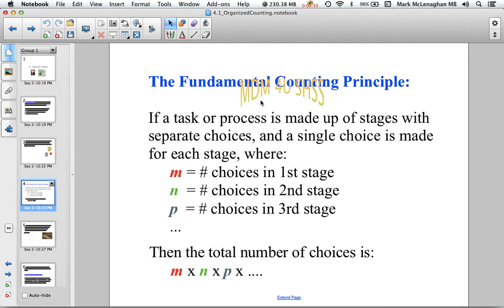This is also an example of what we call the fundamental counting principle. For a task or process made up of stages with separate choices for each stage, we can figure out the total number of choices by multiplying the number of choices for each stage. For example, Johnny had two shirts and four pairs of pants, so 2 × 4 = 8.